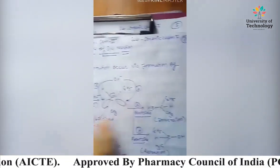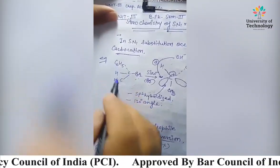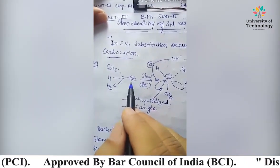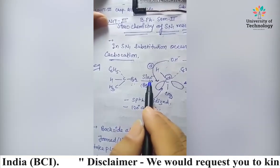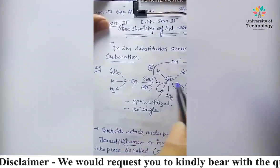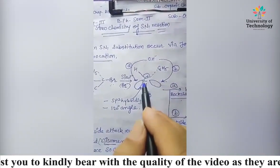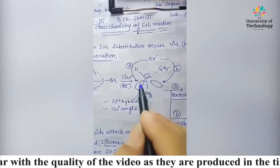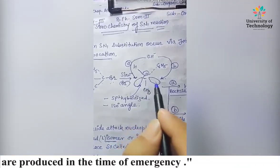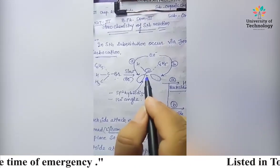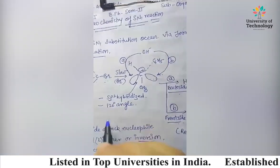Let us understand one example. This is the tertiary butyl compound. In the first step, there is a slow or rate-determining step. What happens here is a transitional state. The carbocation is formed, and it has two vacant p-orbitals. The carbocation is sp2 hybridized.